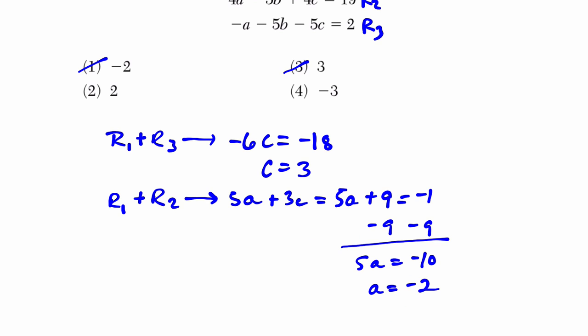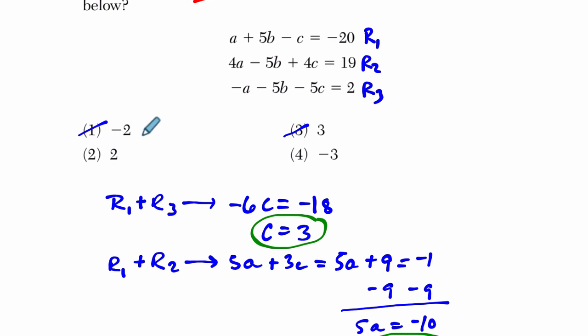Now we can solve for b because we have c. We have a. You can plug these values into any of these equations up here and solve for b. So let's plug in the first one. We have negative 2 is a plus 5b minus 3, that's our c value, equals negative 20.